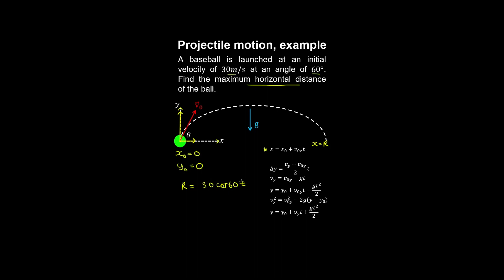We need an expression for the time t, so we use the vertical kinematic equation. Because the initial y position equals the final y position, we have the vertical component of velocity multiplied by t minus gravitational acceleration multiplied by t squared over two. Factoring out t and solving, we substitute for t to find the range of the projectile.